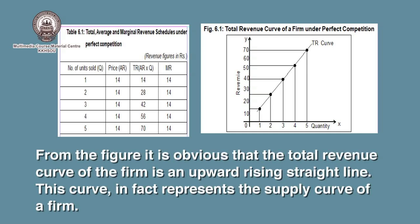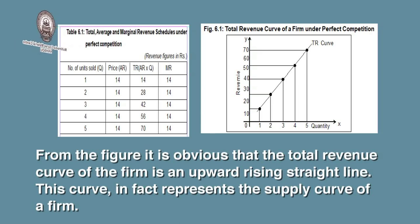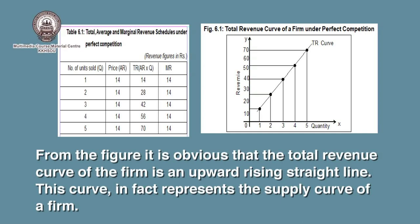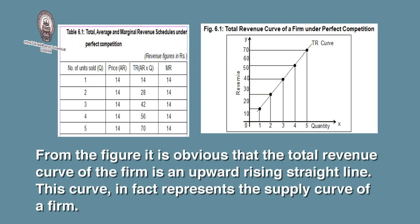In this table, we can see the price is 14, and at this price the seller can sell any amount of the product. When he sells 1 unit, total revenue is 14 and marginal revenue is also 14. When he sells 2 units at price 14, total revenue is 28 and marginal revenue is again 14. When he sells 3 units at price 14, total revenue is 42 and marginal revenue is 14. When he sells 4 units at price 14, total revenue is 56 and marginal revenue is 14 (56 minus 42). When he sells 5 units, total revenue is 70 and marginal revenue is 14.